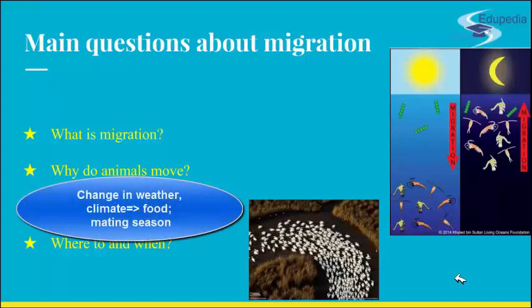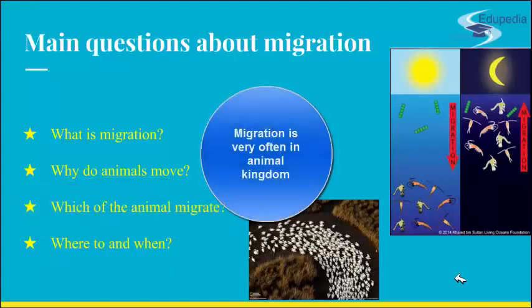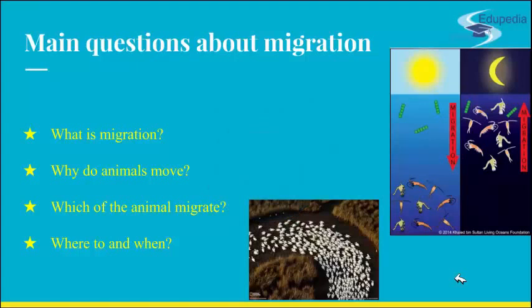Now, which animals migrate? The most well-known taxa for migration are definitely birds. They are the ones scientists first studied when thinking about what they do in winter when they are not at their usual summer location, and their migration was most visible. However, the truth is more complex — migration is nearly universal within the animal kingdom. In fact, all major animal groups, including birds, mammals, fish, reptiles, amphibians, insects, and crustaceans migrate. In the next presentation, we will talk in more detail about every taxa's migrational habits.